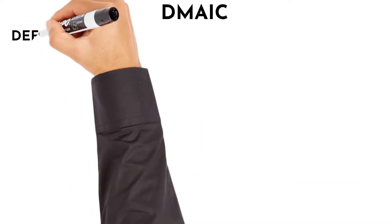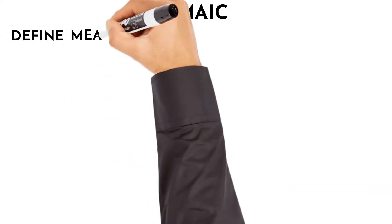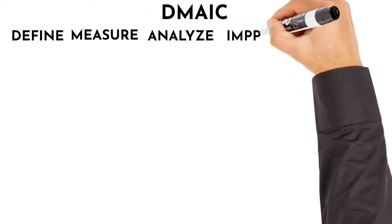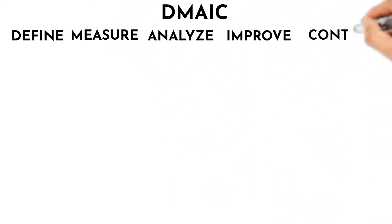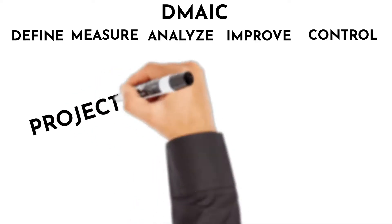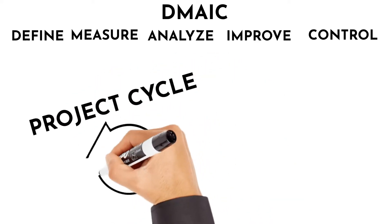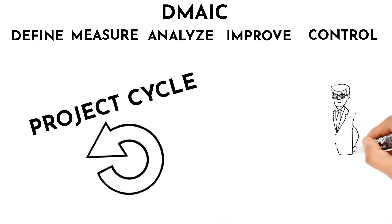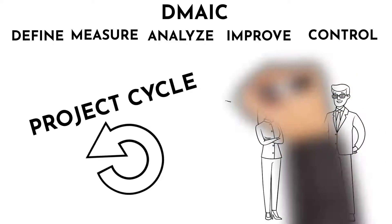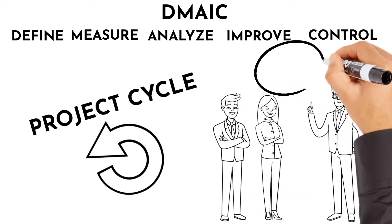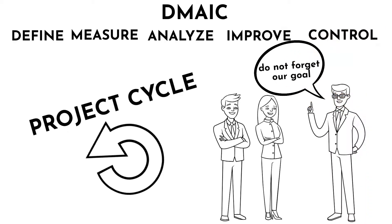DMAIC is an acronym that stands for Define, Measure, Analyze, Improve and Control. These are five phases followed during the project life cycle. Every phase requires some steps to be accomplished to make sure the team is following the right path that will lead to the ultimate project goal.